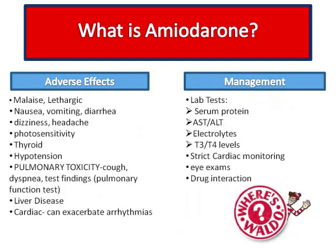Some side effects of amiodarone include nausea, vomiting, and diarrhea, lethargy, and dizziness. It can also cause hypotension, so always make sure to know a patient's blood pressure before administering. Giving amiodarone can also cause arrhythmias, so strict cardiac monitoring is key. Serious side effects include liver disease — check AST and ALT lab values — and pulmonary toxicity.